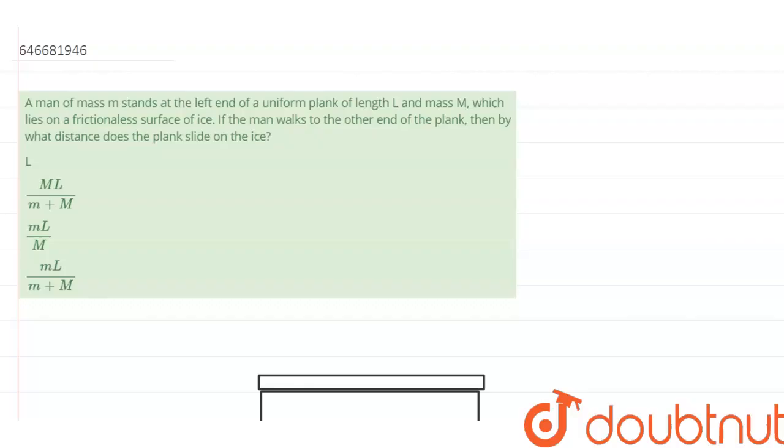A man of mass m stands at the left end of a uniform plank of length L and mass M, which lies on a frictionless surface of ice. If the man walks to the other end of the plank, then by what distance does the plank slide on the ice?